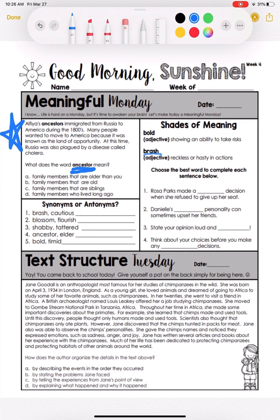Second, we have synonyms or antonyms. As a reminder, synonyms are two words that mean nearly the same thing, and antonyms are words that are opposites. You're going to write on the line either 'synonym' if they mean the same, or 'antonym' if they are antonyms.